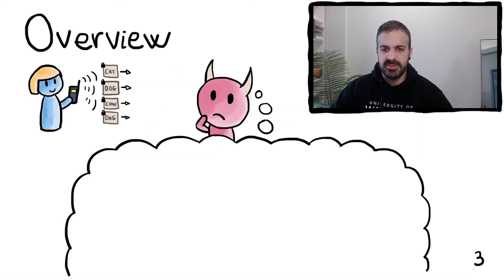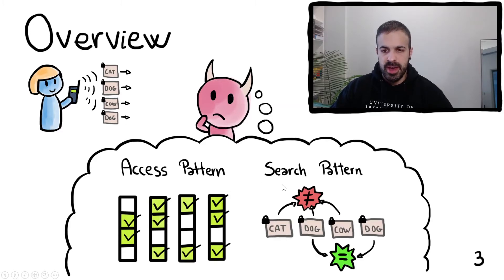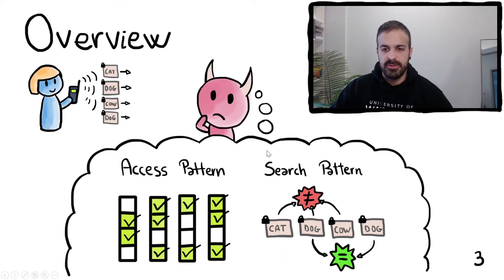In this process the leakage is the following. On the one hand the adversary sees the access pattern of each of the queries, that is the list of documents that have matched each of the queries. They also see the search pattern, which refers to which two query tokens are identical. In this case the adversary sees that the first three queries are different but queries number 2 and 4 are identical. Both these leakages can allow the adversary to recover the underlying keywords of each query, therefore it is very important to hide both types of leakage.